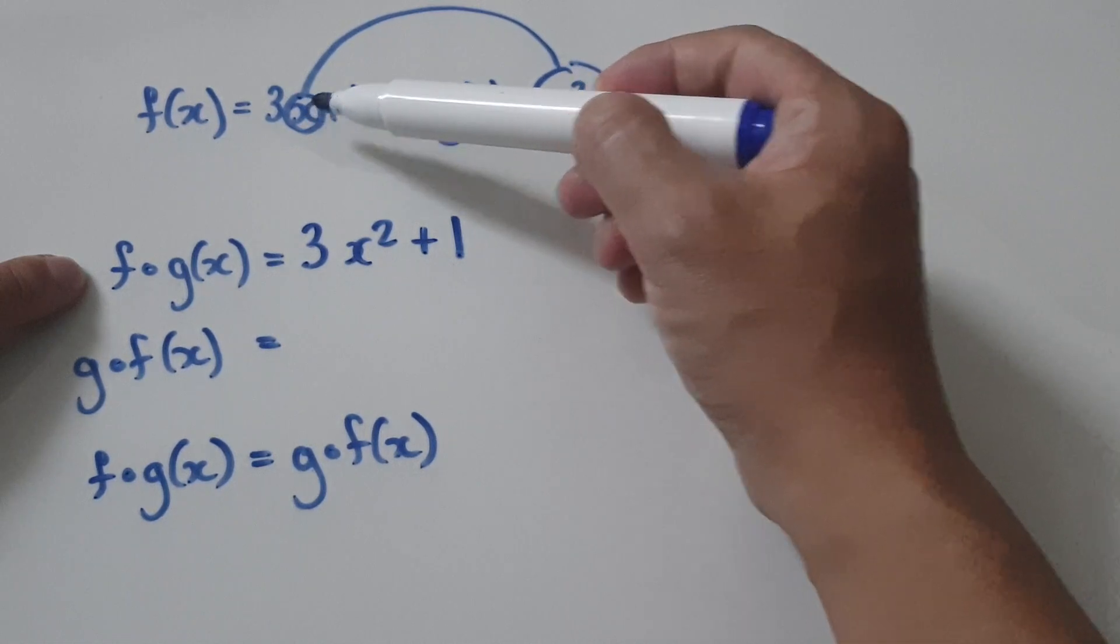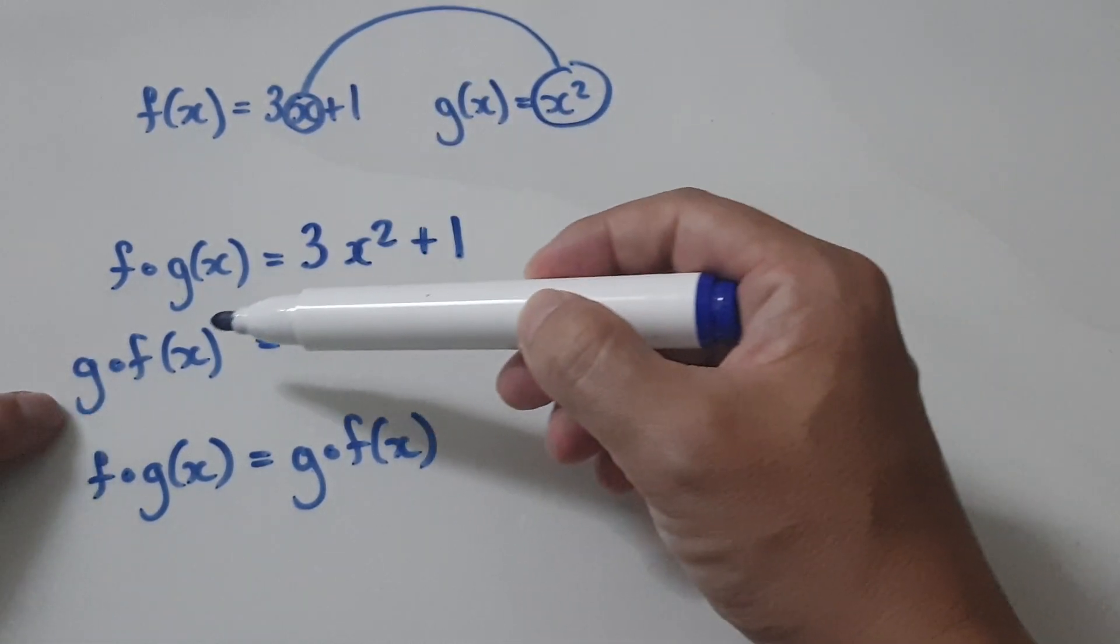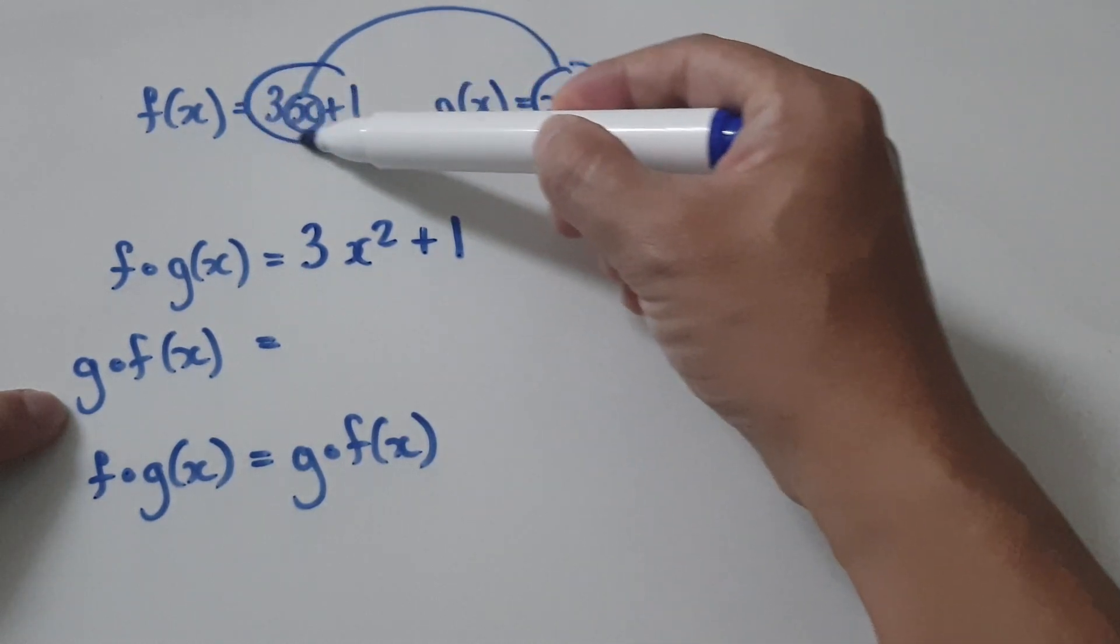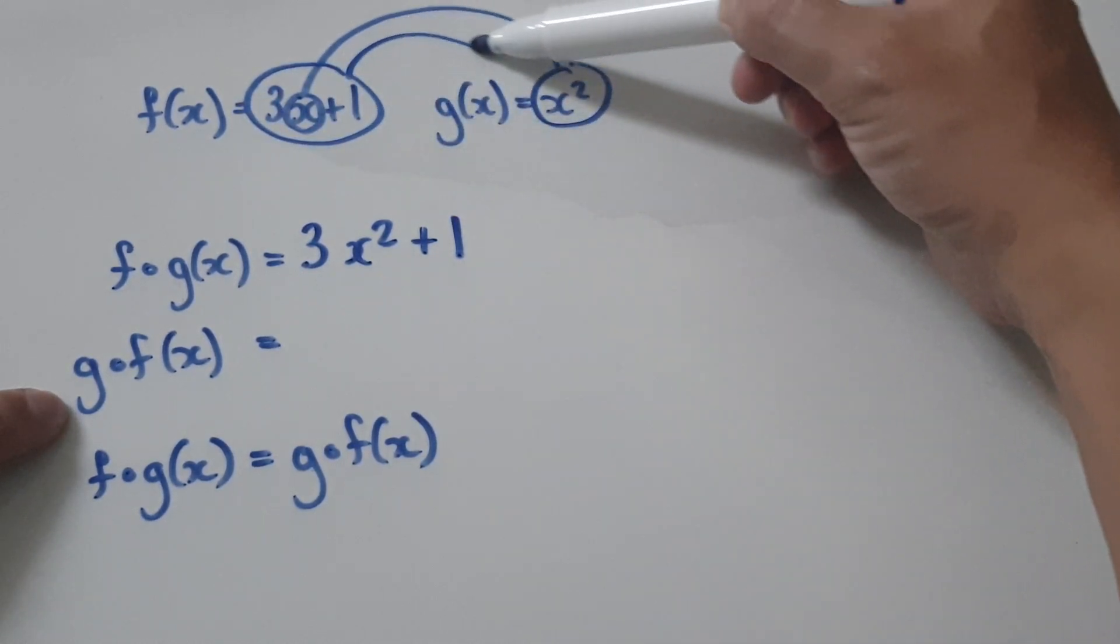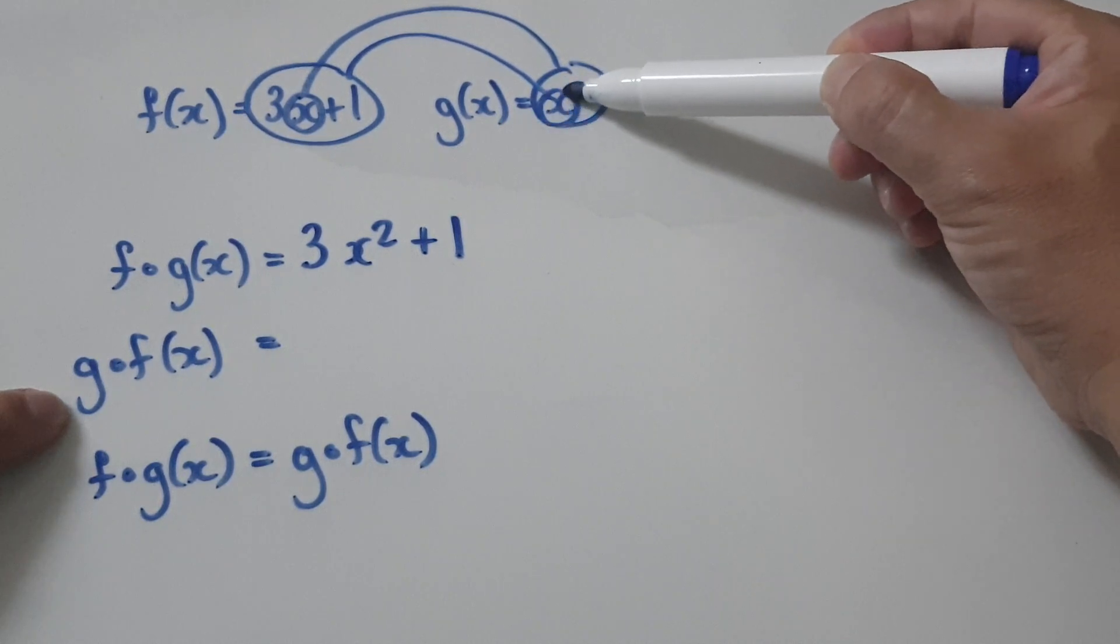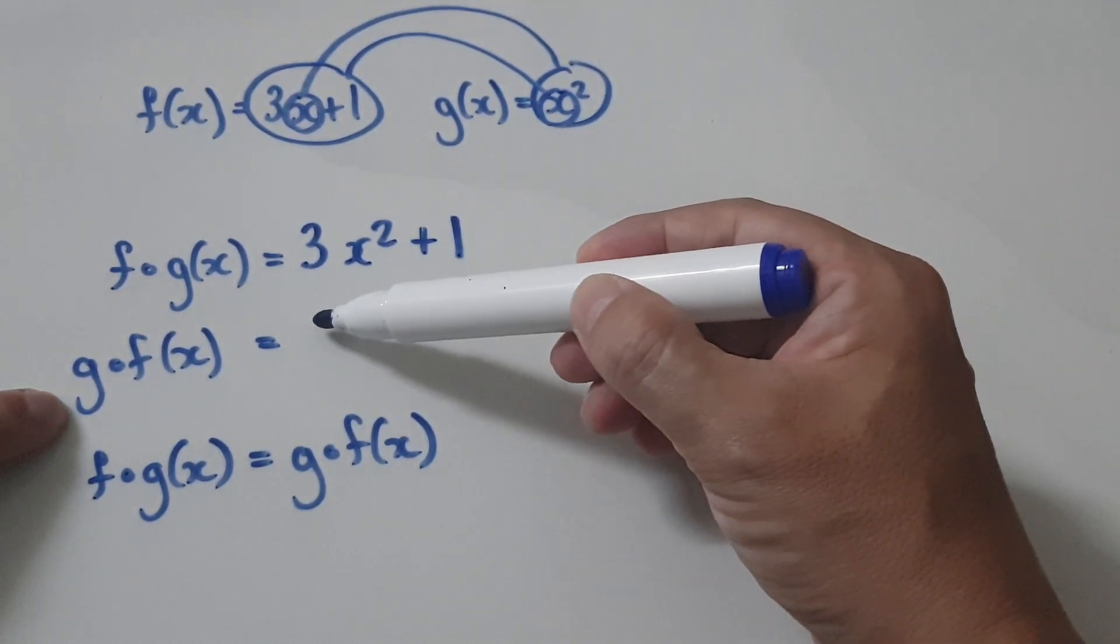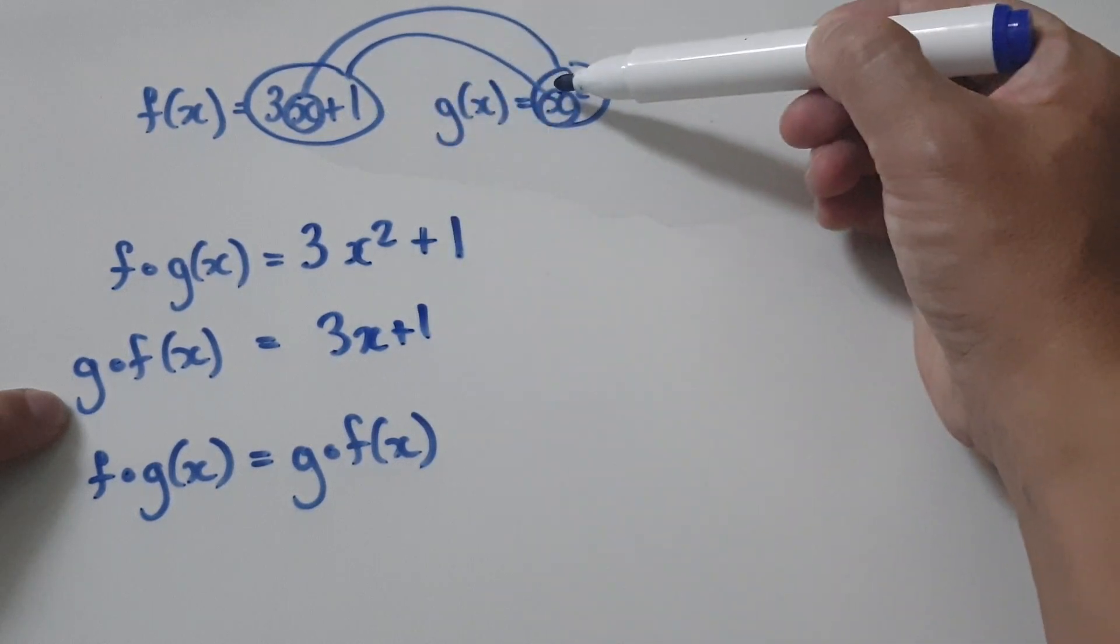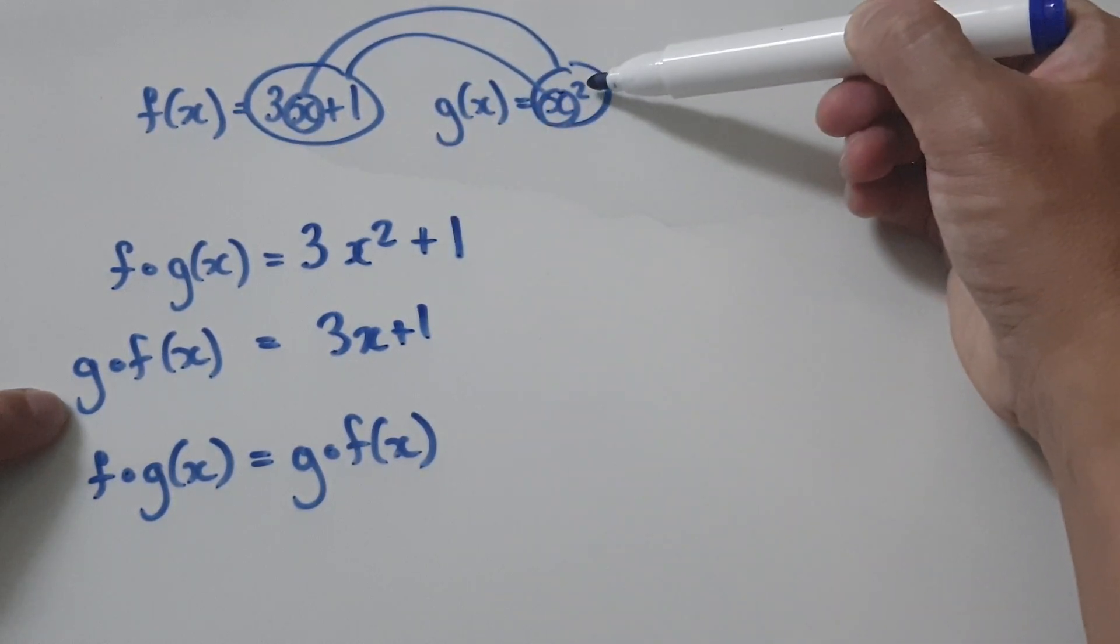Now get f(x), bury it inside g. So get this whole thing here, bury the whole thing inside the x here. So that will then give you, that will then give you three x plus one. Remember you're burying it inside the x, and then you've got your squared. Squared.